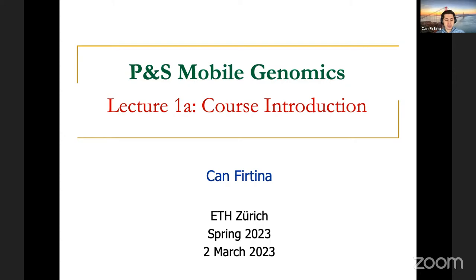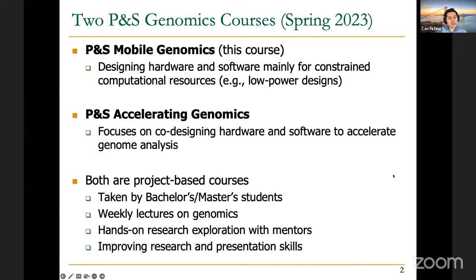Today we're going to be covering the basics of this course, what you should expect from this course, and what we expect from the students taking it. This semester, we offer two PNS genomics courses. One is the PNS mobile genomics course, which is this one. The mobile genomics course mainly aims to design hardware and/or software for constrained computational resources, for example using low-power designs so that they can efficiently work on mobile phones. The other PNS genomics course is PNS accelerating genomics.